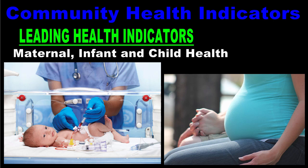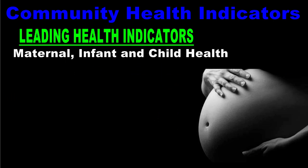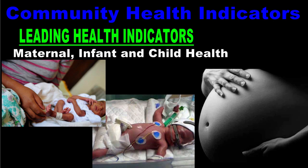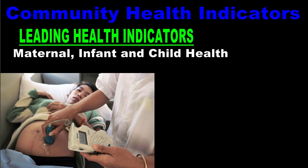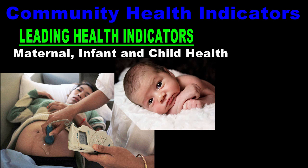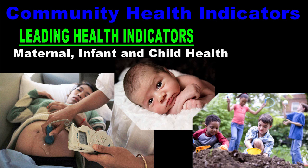The last leading health indicator included in Healthy People 2020 is maternal, infant, and child health. This health indicator examines the well-being of pregnant women in order to reduce the number of premature births and infant deaths. If the U.S. can focus on providing good medical care for mothers, then we can prevent death and disability amongst babies so that, as children, they can reach their full potential.